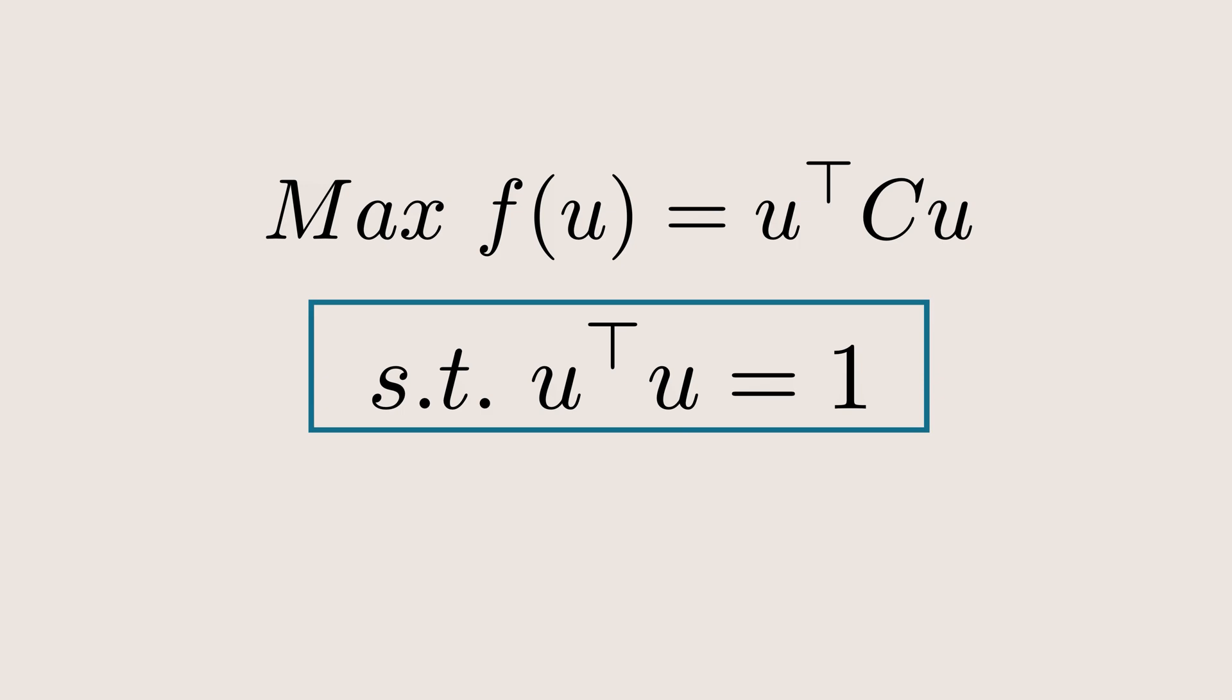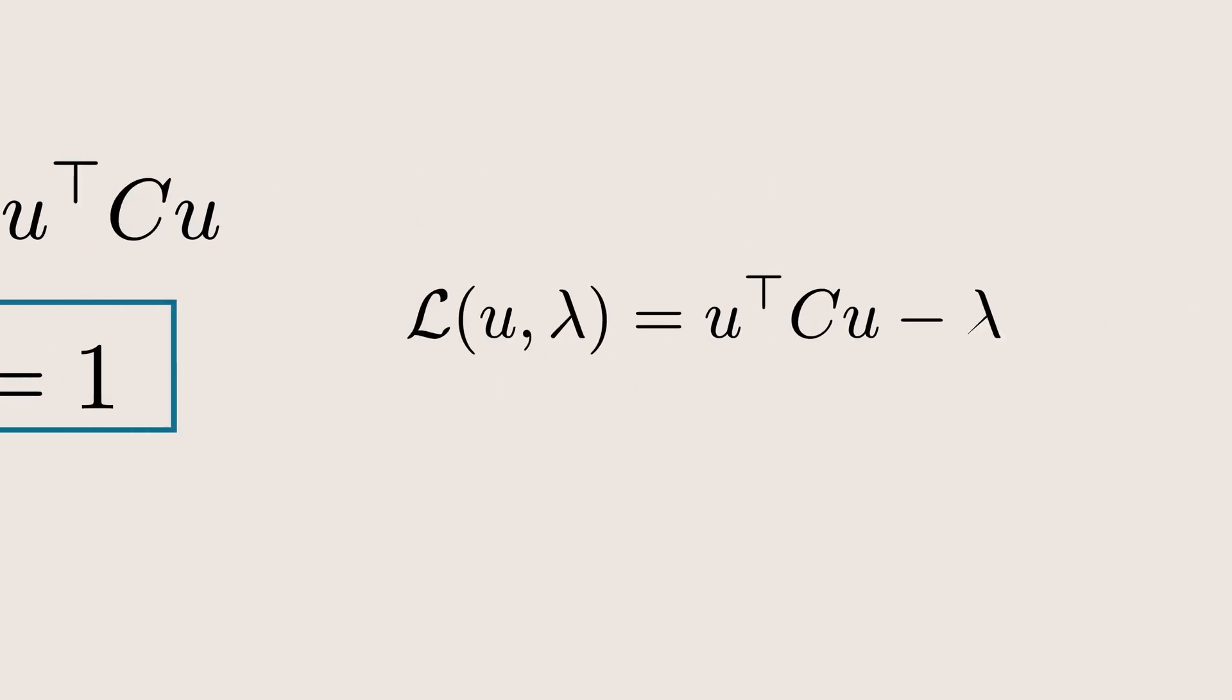This makes it a constraint optimization problem. To solve this, we use the Lagrangian method. This new combined expression is called the Lagrangian. Here this part is our cost function that we need to maximize and this part represents the constraint that the vector should remain a unit vector. The term lambda here is called the Lagrange multiplier, which balances the cost function and the constraint.